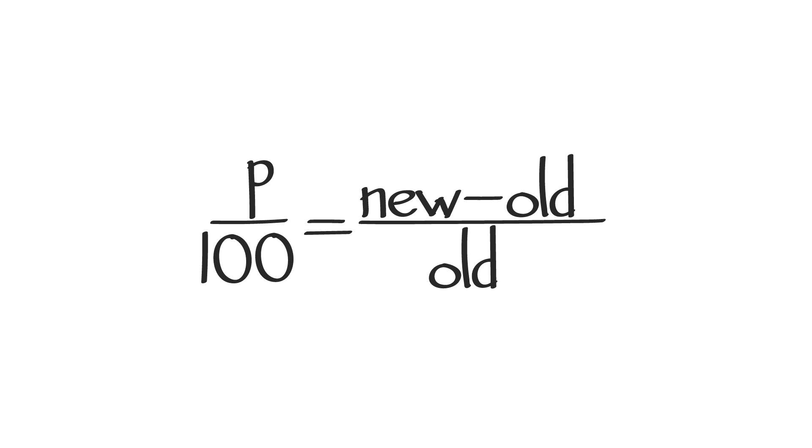We've learned how to increase or decrease a value by a certain percentage to arrive at a new value. But some ACT problems will give two values and ask by what percentage the numbers differ. That's when we use the formula: p over 100 equals new minus old over old. Let's use this formula on an ACT question.